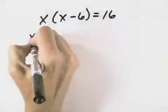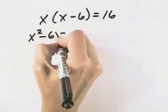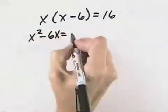That means first I'm going to multiply out the left side to get X squared minus 6X equals 16.